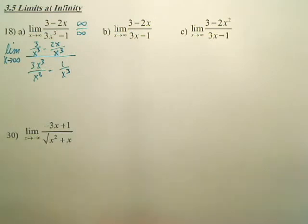Why can we do that? Basically, we're multiplying top and bottom by the same thing — you're multiplying by a fraction. You can always multiply top and bottom by the same thing, and that's what we just did.